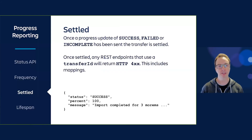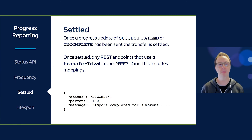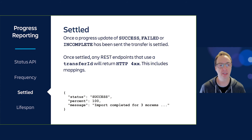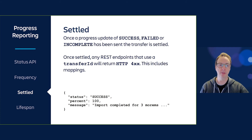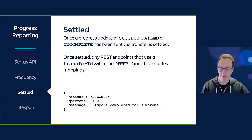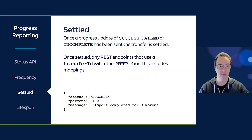Once a progress update of success, failed, or incomplete has been sent, the transfer is settled. You really should send one of those updates at the end because it affects your app reliability. Once settled, any REST endpoints that use a transfer ID will return a 400 response — this includes mappings, file uploads, and everything else. So once you've processed all your uploaded data and finished with everything, you send success, failed, or incomplete, and at that point you have no access to mappings or anything else.